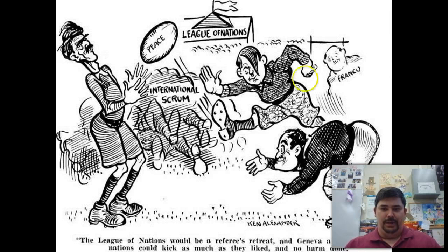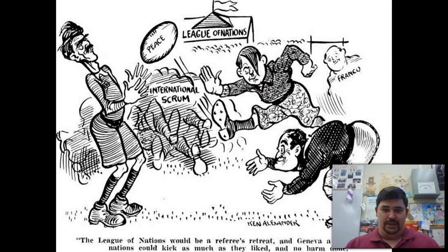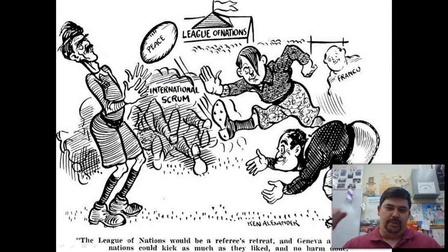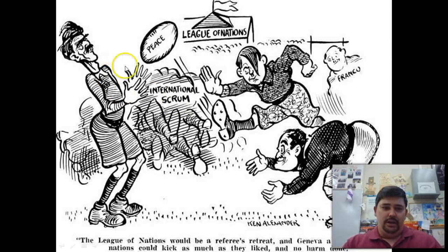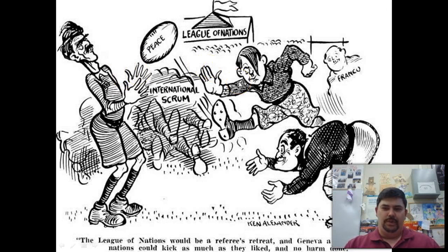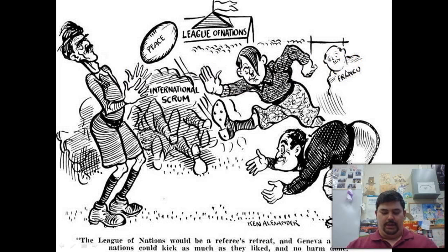There's a political cartoon showing the League of Nations having a game — an international scrum, like a pileup. Peace is in their grasp, and Hitler's like, 'No.' Franco is in the back too — Franco, of course, being the Spanish Civil War figure.